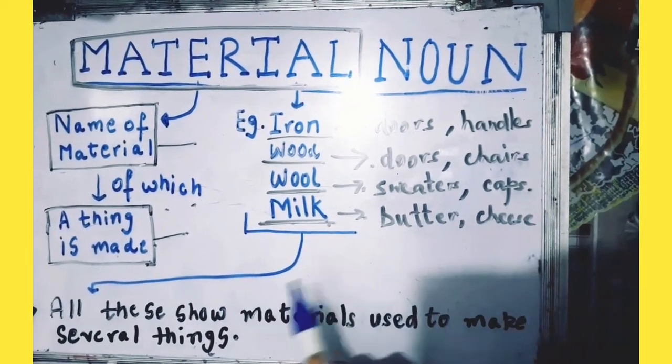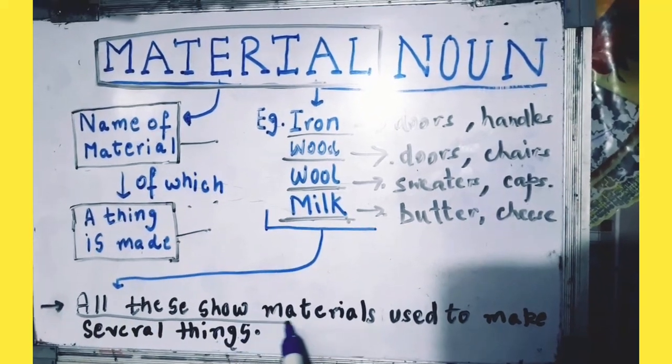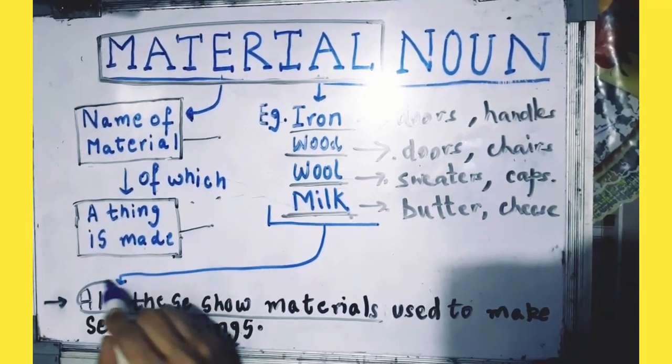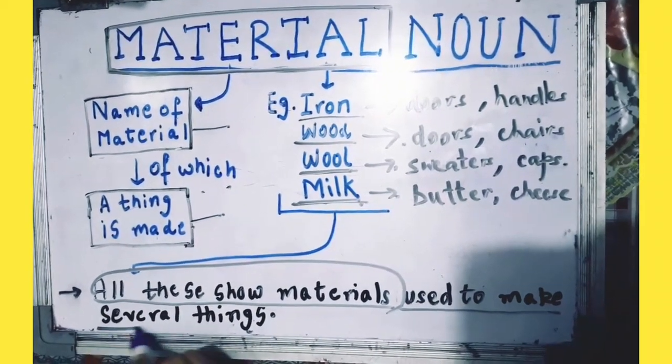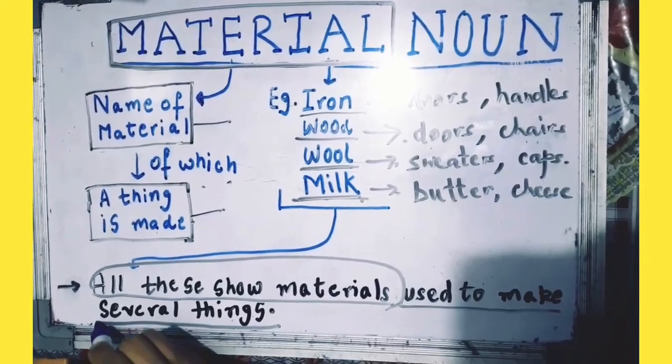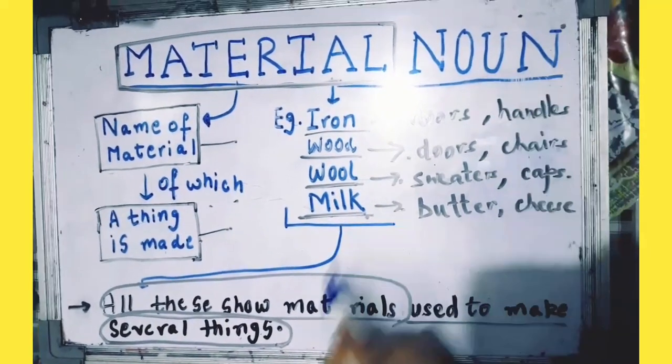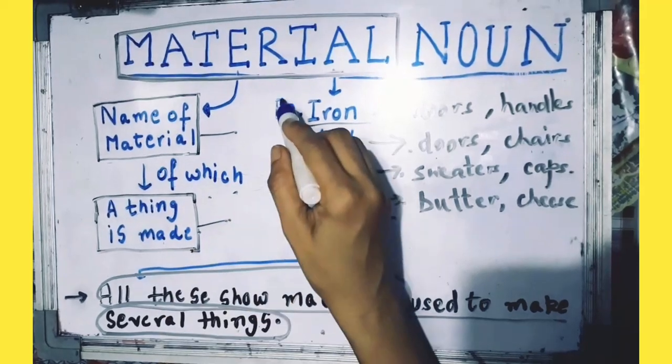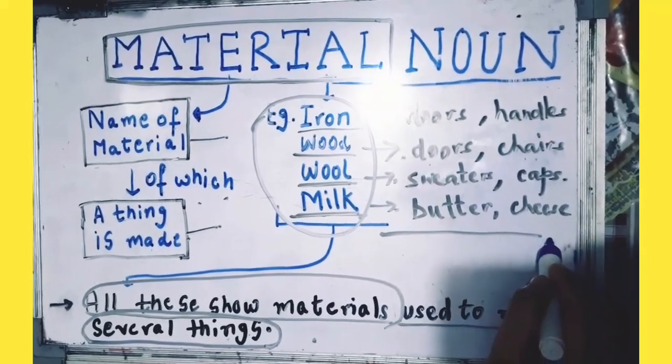So children, all these show materials used to make several things. This is material noun, which means all these materials are used to make different things.